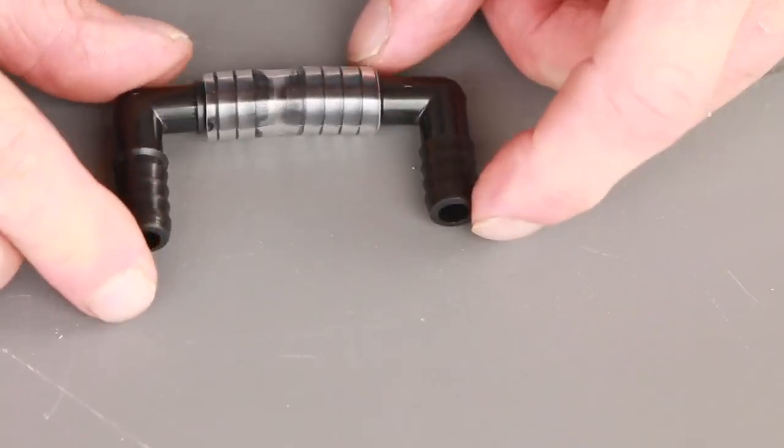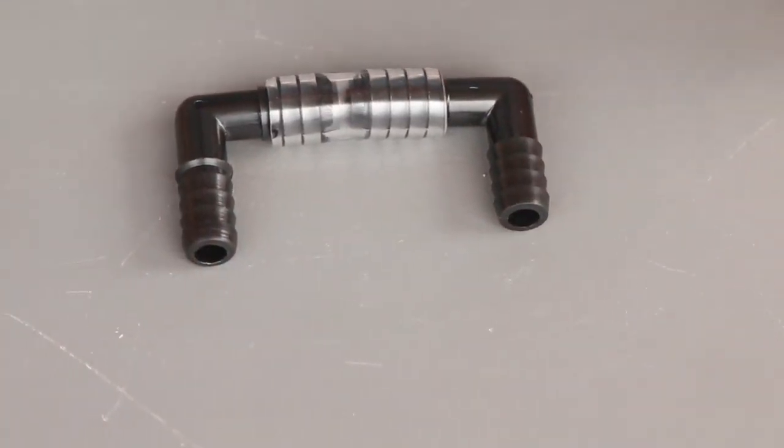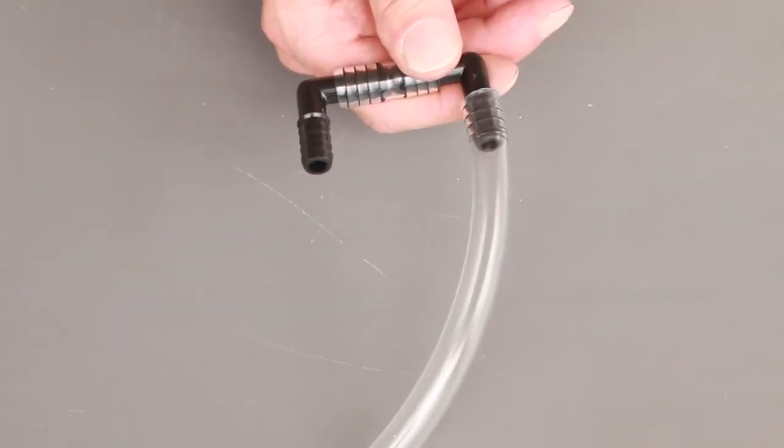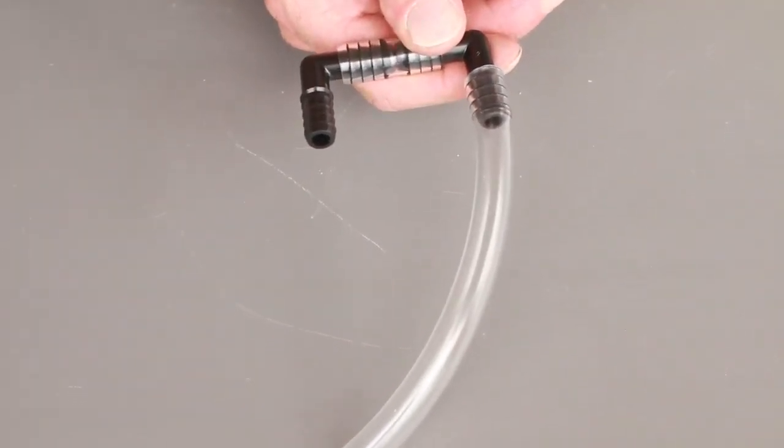On each end of the 1 and a half inch hose, push one of the 90 degree barbed fittings. On the other end of one of the barbed fittings, add the 6 inch hose piece.